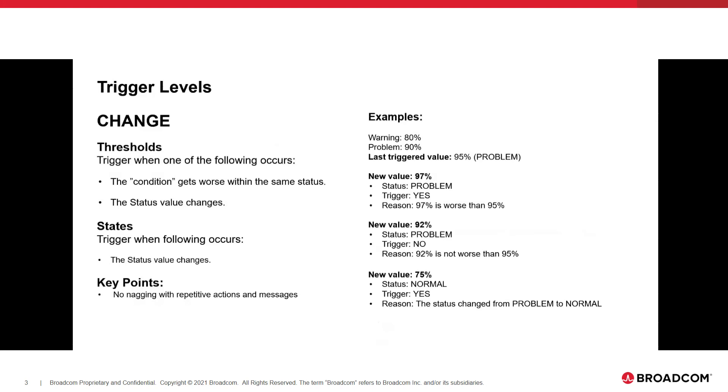The bottom bullet there is our new value is 95, status being warning. Does it trigger? Yes, it does. The reason is, you changed statuses. You went from problem to warning, or in a lot of cases, you might think from red to green. Now, a key point on this is, you use change when you want to reduce the nagging of thresholds. The idea here is, I don't want to tell you every single time. I want you to tell when something got worse or something changed.